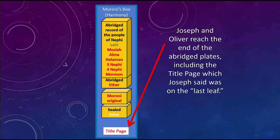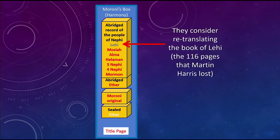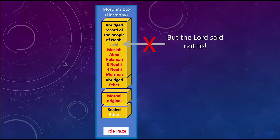In the process of translation, Joseph and Oliver reached the end of the abridged plates, got all the way to the end, did the title page — which was the last leaf — and then thought maybe they should go re-translate the Book of Lehi, the first part of those plates. Because those were lost. Let's redo it. But the Lord said no — don't re-translate it. That's what D&C 10 is explaining: why the Lord told Joseph not to re-translate. Some scholars think there was actually more than 116 pages, but Joseph Smith said it was 116 pages, and that's good enough.